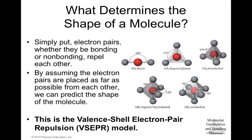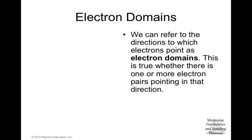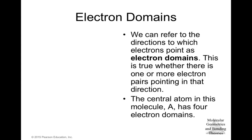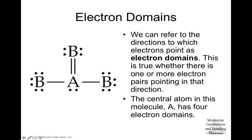This is the Valence Shell Electron Pair Repulsion (VSEPR) model — a model that predicts the shape of a molecule by minimizing repulsion from pairs of electrons, whether they are bonding pairs or lone pairs. We can refer to each direction in which electrons point as an electron domain. This is true whether there is one or more electron pairs pointing in that direction. The central atom in this example has four electron domains: one lone pair, two single bonds, and one double bond — counting as one domain each — giving us one, two, three, and four electron domains around the atom.